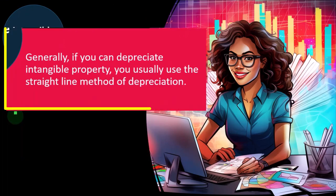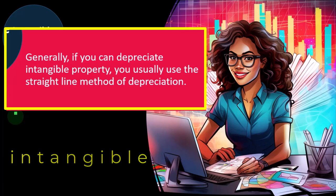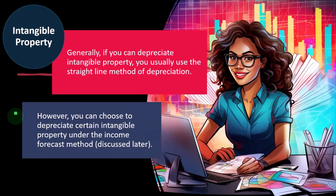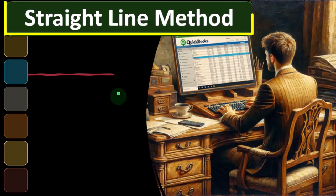For intangible property — if you can depreciate intangible property — you usually use the straight-line method. We've said that most of the time we use MACRS for things like machinery and property, plant and equipment. But if it's intangible, these are typically things that are property due to legal rights, such as a patent. If you can depreciate it, usually you'll use the straight-line method. However, you can choose to depreciate certain intangible property under the income forecast method. You cannot depreciate intangible property that is a Section 179 intangible or that does not otherwise meet all the requirements under what property can be depreciated.